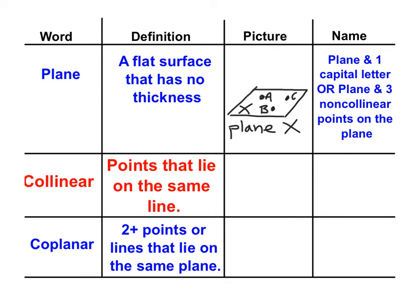The second way to name the plane is the word plane and three non-collinear points. So you can see I have a point A, a point B, and a point C. So I'm going to just go plane A, B, C. And you could put those three points in any order that you want to.